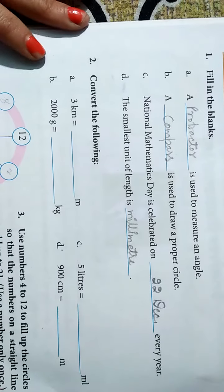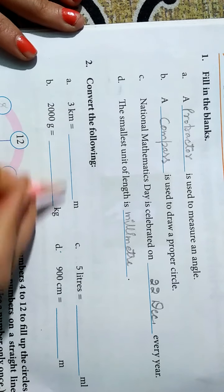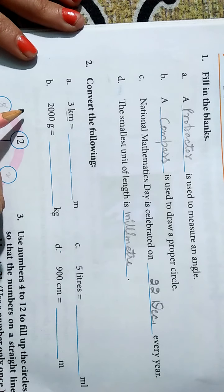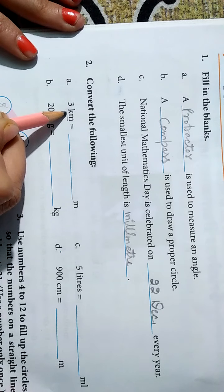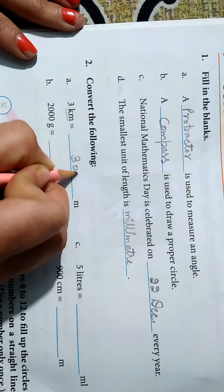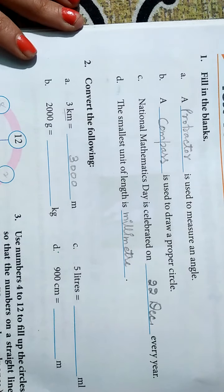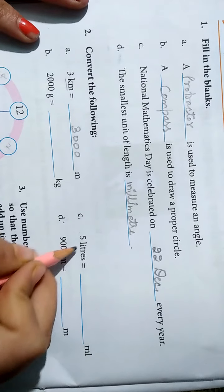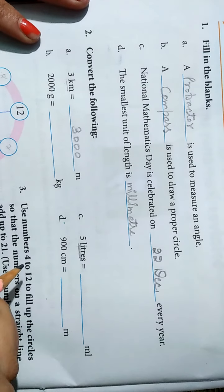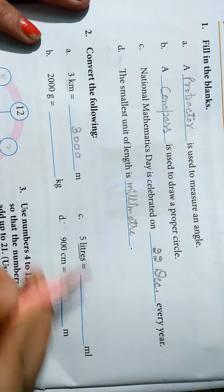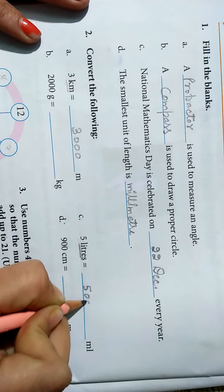Now next, convert the following. Three kilometer. 1 kilometer me kitna hota hain? 1000. To 3 me kitna hota hain? 3000 meter. Next, five liter. 1 liter me kitna hota hain? 1000. To 5 me kitna hota hain? 5000 milliliter.